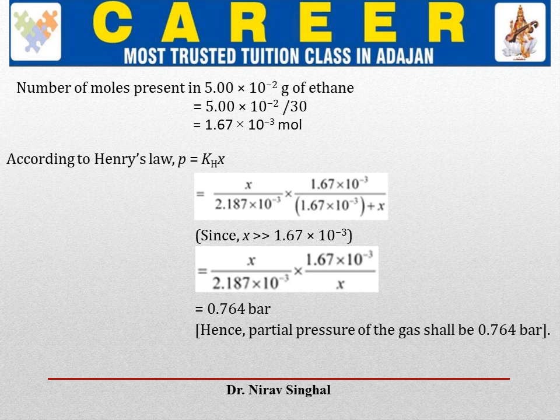The first given quantity of ethane was used to predict the value of KH, and that KH value was then used after converting the next quantity of ethane into moles, allowing us to solve the question. This is a tricky question. The chance of such tricky questions in entrance examinations is always high, and as you know, most entrance examinations now consist of questions based on NCERT after the implementation of NTA. So such questions play a very important role.